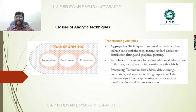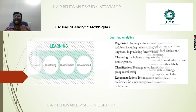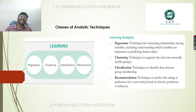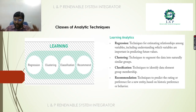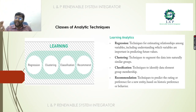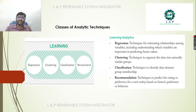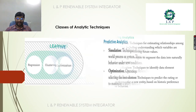Learning analytics: Regression is a technique for estimating the relationship among variables, including understanding which variables are important in predicting future values. Clustering is a technique to segment data into natural similar groups. Classification is a technique to identify data elements and group membership. Recommendation is a technique to predict ratings or preferences for a new entity based on historic preferences — for example, on Facebook or Amazon, they may suggest people you know or products based on your network's activity.